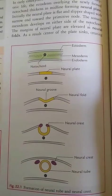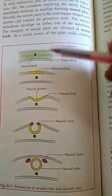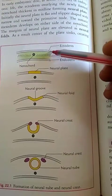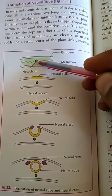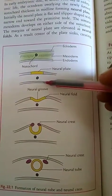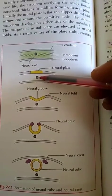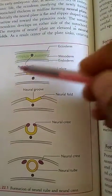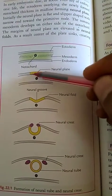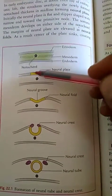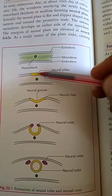Let us see the development of the neural tube. This is ectoderm, this is mesoderm, this is endoderm. At the end of the presomite period, under the inductive influence of the notochord, the neuroectodermal cells dorsal to the notochord become thick and form an elongated slipper-shaped neural plate, also known as the medullary plate.